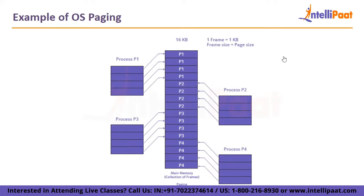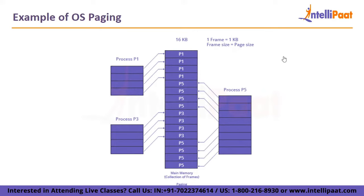p1 has been loaded into primary memory, acquiring 4 KB of frame space. p5 was also loaded into frames at the same time since it was ready to be performed. A succession of pages may or may not be loaded contiguously. The first 4 KB of p5 are imported after p1, and the remaining 4 KB are saved after process p3. Process p1 obtains the first 4 frames; the first 4 pages of p5 capture the next 4 frames; p3 receives the following 4 frames; and the remaining 4 pages of p5 fill the final 4 frames.